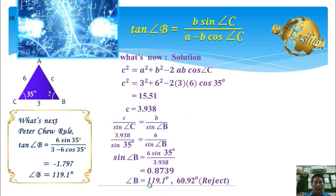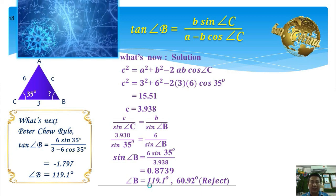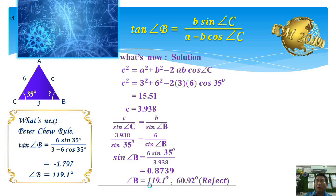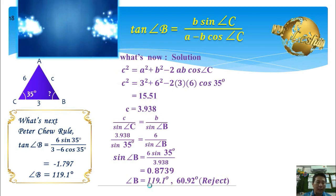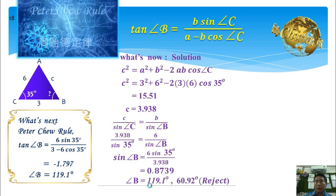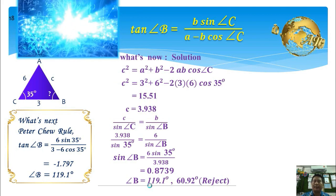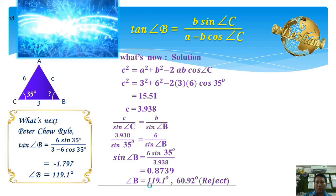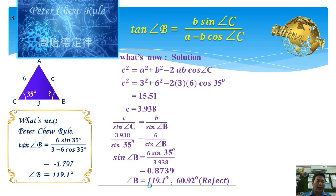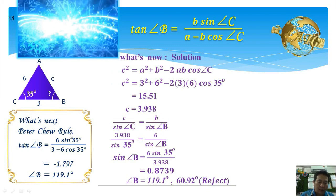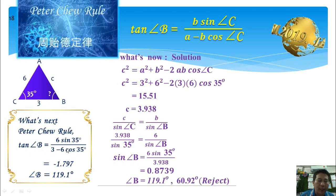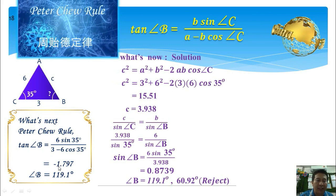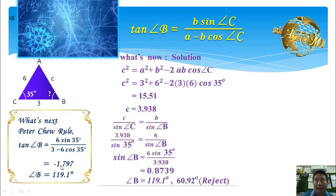In addition to being simple, accurate, and straightforward, another advantage of Peter Chiu Rule is that we can visually determine whether the angle we want to find — such as angle B — is acute or obtuse. Because Peter Chiu Rule uses tangent, the tangent of an obtuse angle will be negative, and the tangent of an acute angle will be positive. For example, when tangent B is negative 1.797, angle B is definitely an obtuse angle — 119.1 degrees.